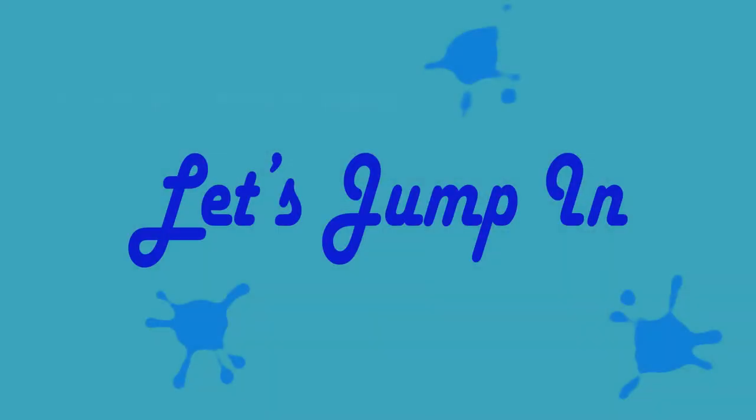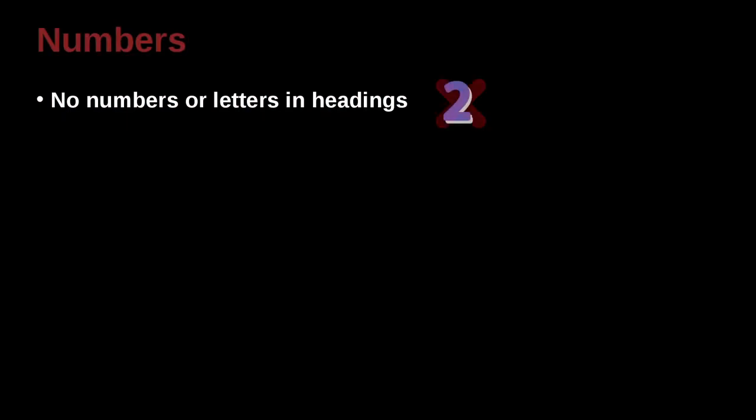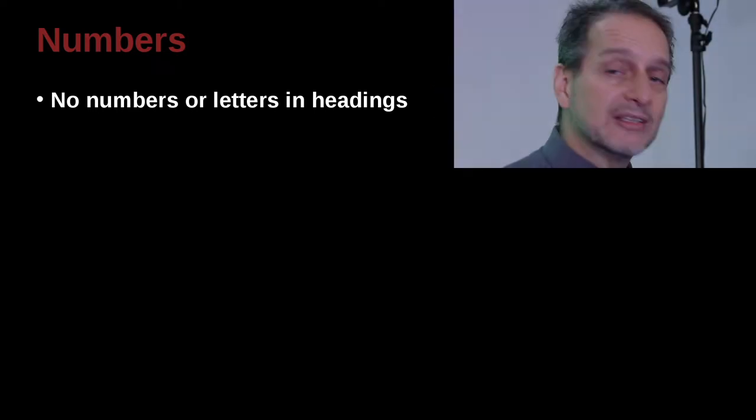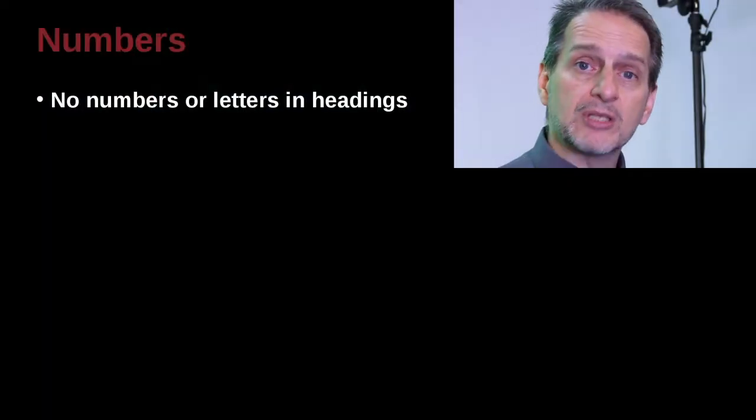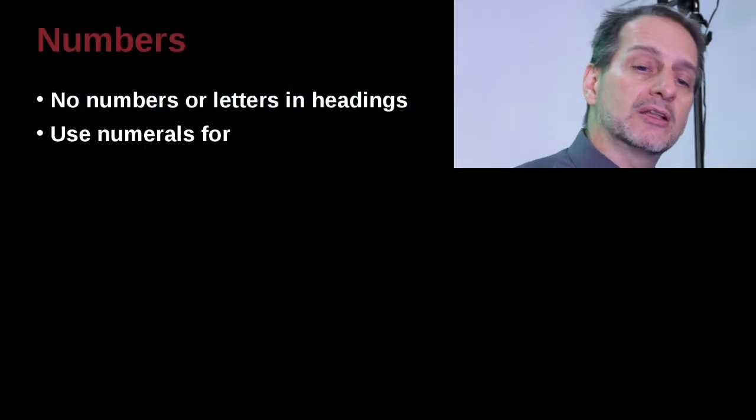Let's jump over to numbers now. So you do not put numbers inside the headings of your paper. When you say methodology, results, discussions, sections and subsections do not have numbers. Again though, there may be a time where you do need to do that because your professor or your journal has asked you to. But usually if you follow APA, no.